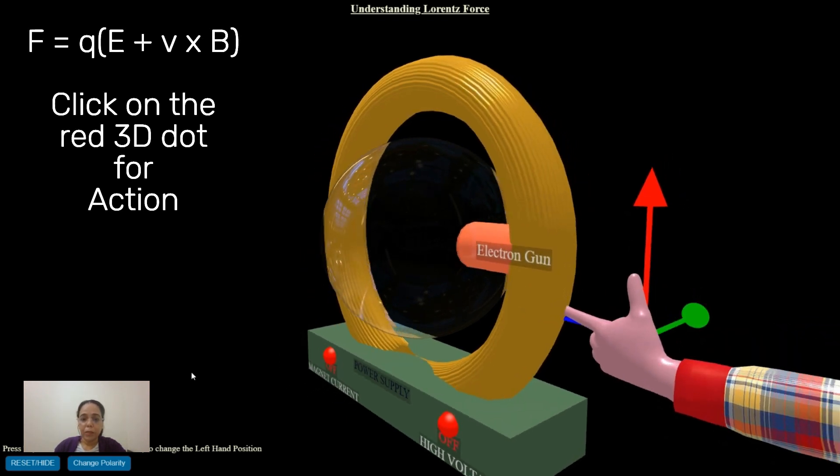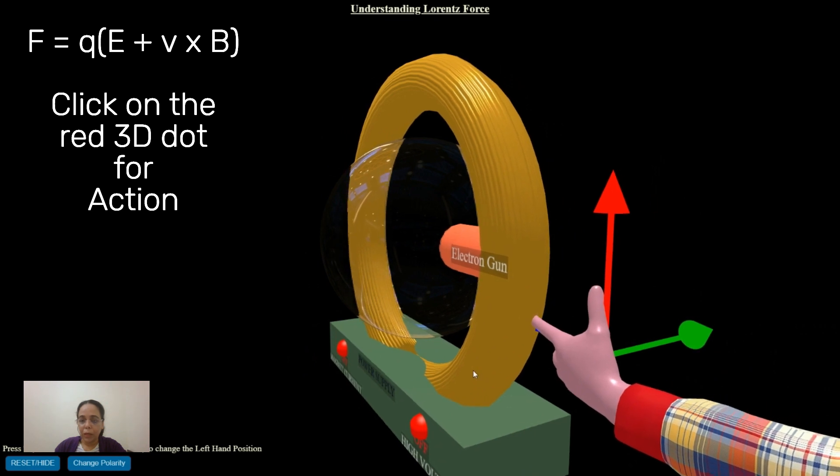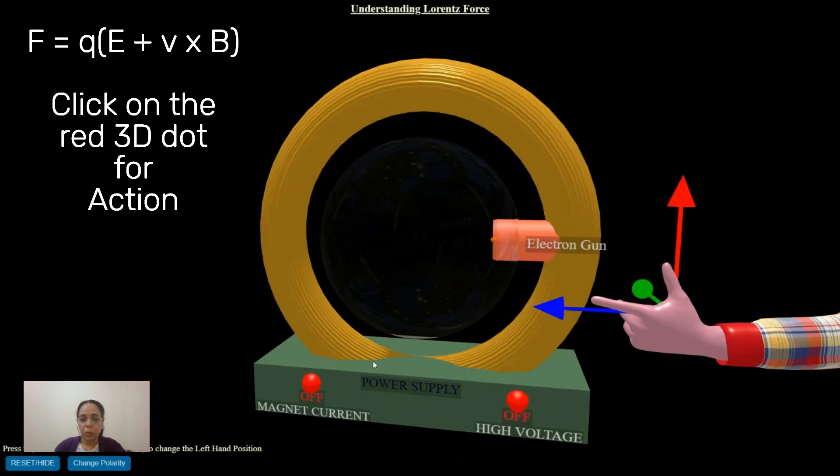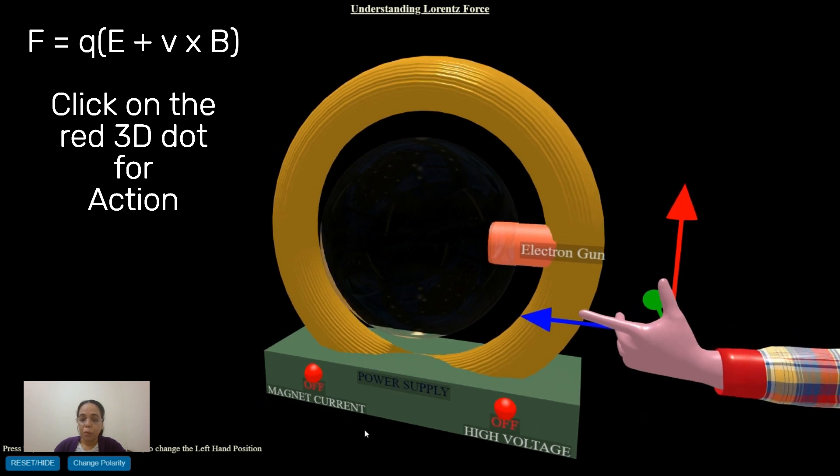Here is a 3D representation of an electron gun and a circular coil known as the Helmholtz coil. You have two power switches: one supplies the necessary power to generate high energy electrons and the other generates the uniform magnetic field.